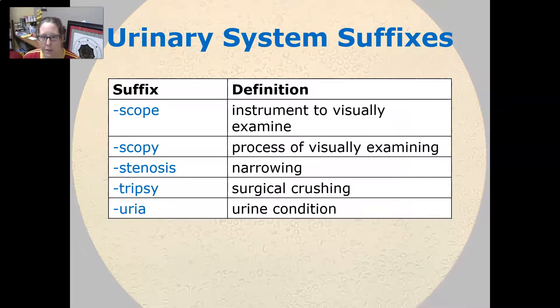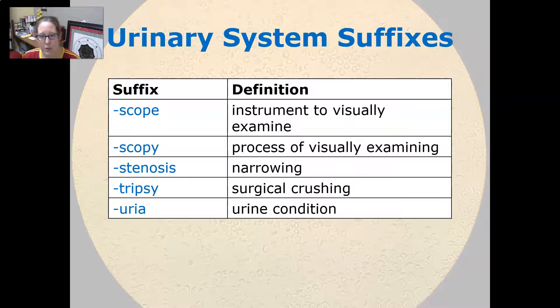Scope is an instrument to visually examine and scopy is the process of visually examining. Stenosis is narrowing and tripsy is surgical crushing, with urea being a urine condition.